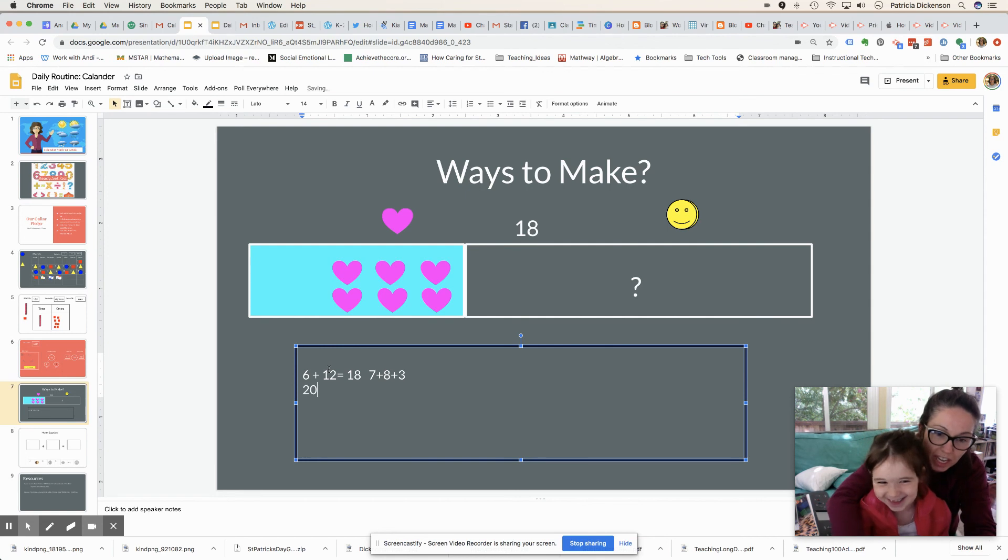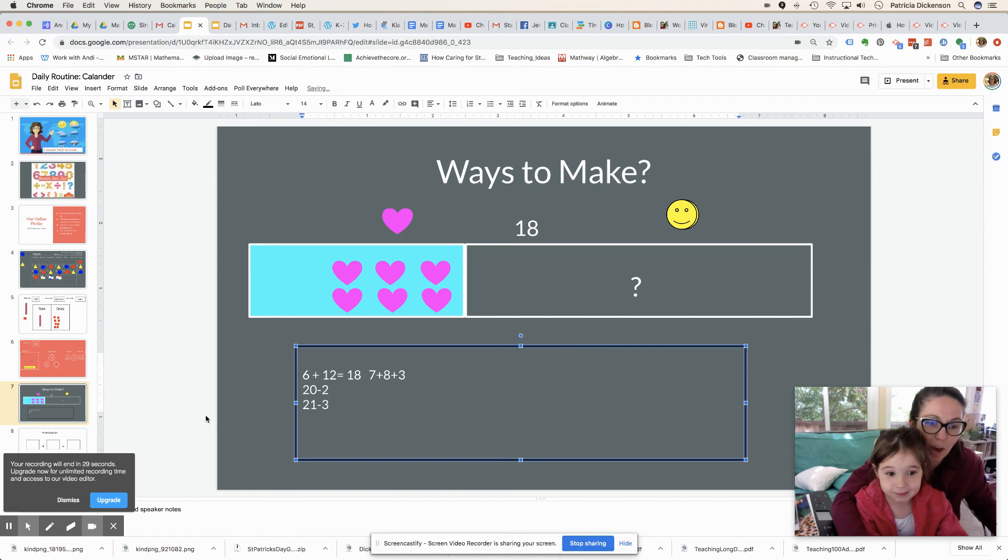I want to do one more. What if I had 20? How would I get to 18 if I was at 20? Minus. Minus what? Minus two. Awesome. And if you got 21, you would do 21 minus three. Excellent. You'd come up with a lot of ways.